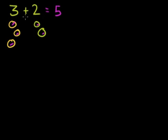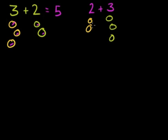We also saw that 3 plus 2 is the exact same thing as 2 plus 3 — you're still going to end up with 5 pieces of fruit no matter the order. This way of thinking about addition is the counting way. The other thing we saw in the last video is the number line version, and they're essentially the same thing.